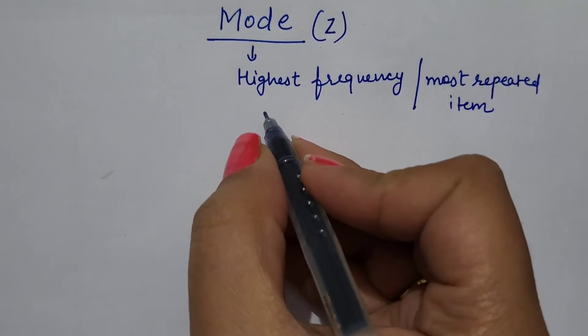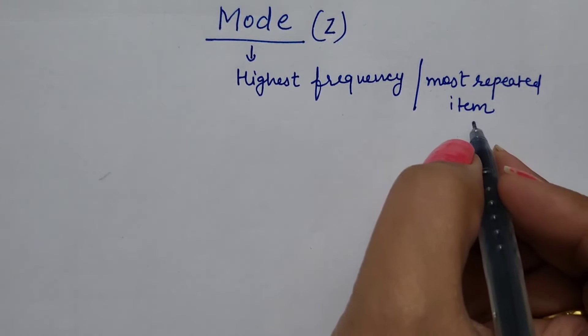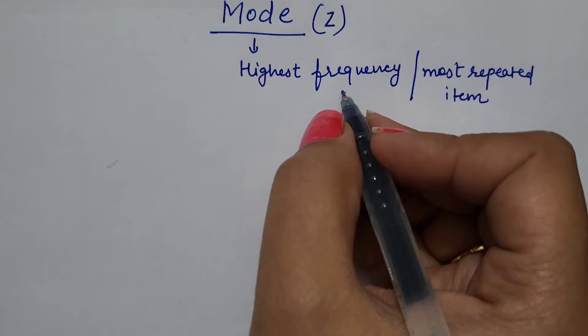Mode represents the highest frequency or the most repeated item in the series.